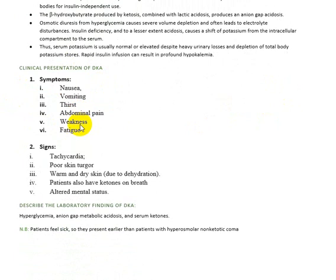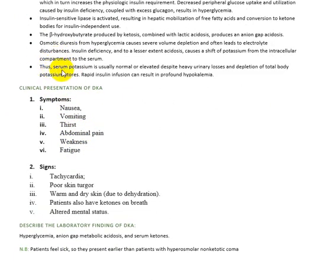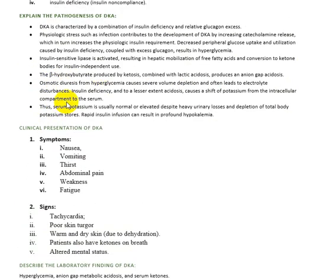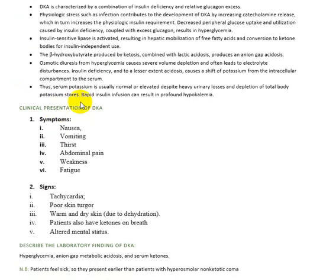Importantly, serum potassium is usually normal if the patient is too ill to have significant losses. However, total body potassium stores are depleted. In diabetic ketoacidosis, there is a depletion of total body potassium stores, and after treatment the patient will show signs of hypokalemia.